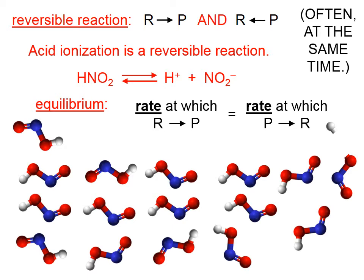Let's just pretend, using this picture at the bottom of the screen, that we have 15 HNO2 molecules, and then over here on the right, we have a single one of those that has ionized into the hydrogen ion and the nitrite ion. Equilibrium means that at the next instant, there will still be a ratio of 15 neutral HNO2 molecules for every one that has ionized.